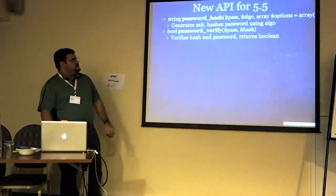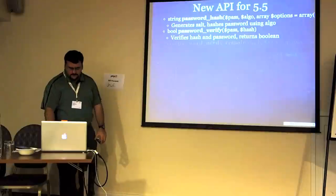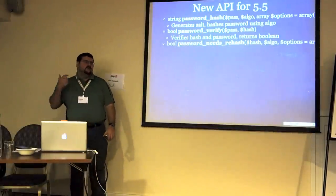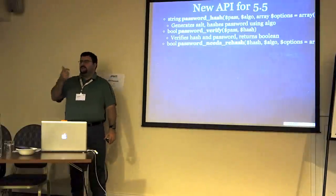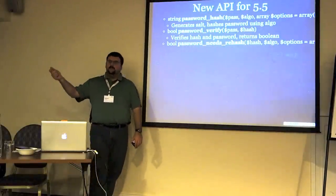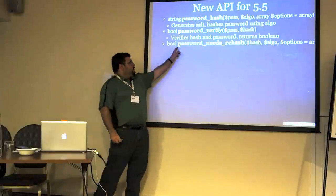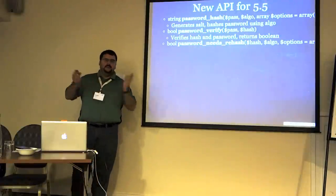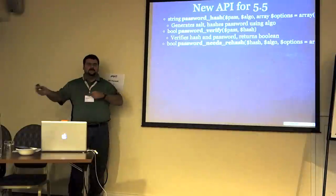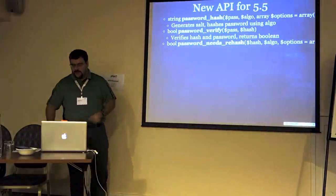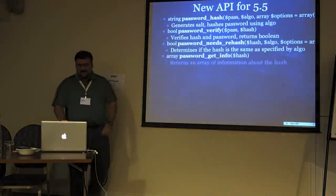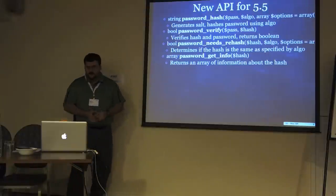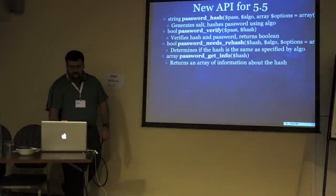password_hash generates a random salt for every single password. There's also password_needs_rehash: if you update and say you were using cost 10 but now want cost 11, you change it in your code. When someone logs in, you run needs_rehash, it looks at the hash and says it needs to be rehashed from 10 to 11, giving you the opportunity to do that. Finally, password_get_info returns the information passed to password_hash when generating it — basically a utility function. That's it: four simple API calls.